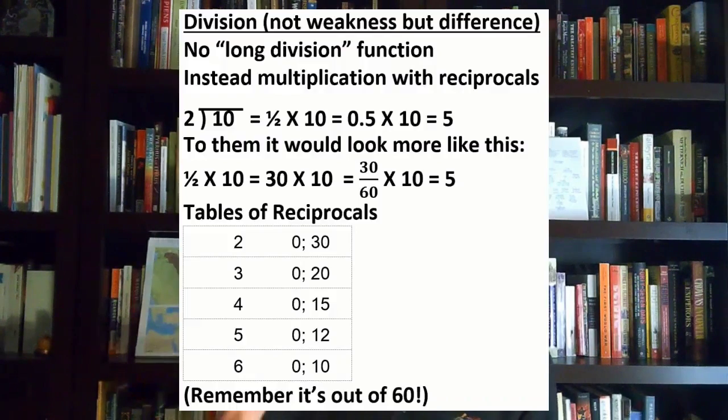Division was also very different for them. Whereas Mesopotamians had a clear addition, subtraction, and multiplication, they did not have this fourth category of division, at least the way we think about it. There was no long division function. Instead, if they're dealing with division, they'd really use multiplication with a reciprocal. So 2 divided into 10, they would take that 2 and flip it around for the reciprocal. So 1/2 times 10 equals 5.